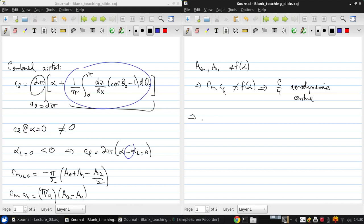And that means we can come up with an expression for the location of the center of pressure, which is just C over 4 times 1 plus π over Cl times A1 minus A2. So, this varies with alpha through the Cl term.